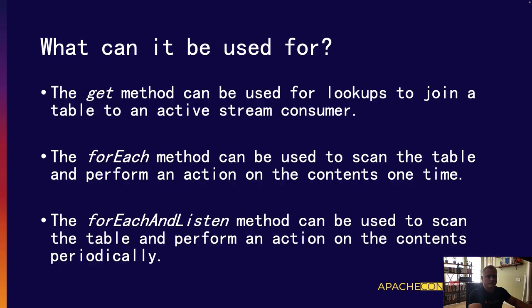The GET method can be used for lookups. It allows you to perform table lookups on a per-key basis, and a good use case is joining an active streaming consumer to a Table View in order to combine datasets for data enrichment. For example, you have a stock quote as a real-time stream, and you want to look up stock stats based on that, which is a slower-moving Table View.